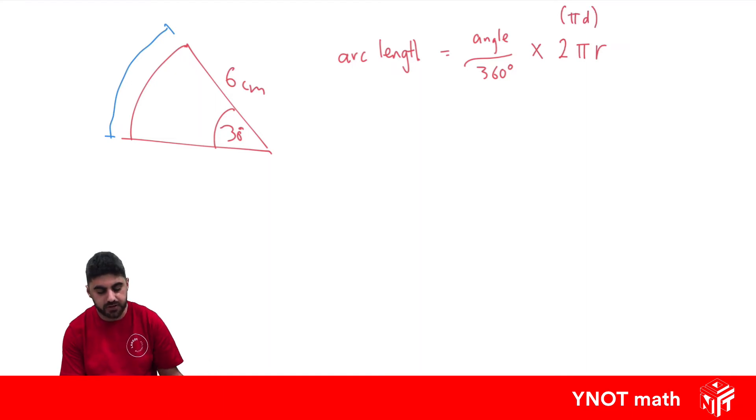So in this case, we should be able to find the arc length because we know the angle at the centre is 30 degrees out of our 360, times 2 times π times our radius, which we know is 6. All that can go in the calculator and we'll get 3.1 centimetres to one decimal place, which means that distance on the arc is 3.1 centimetres around.